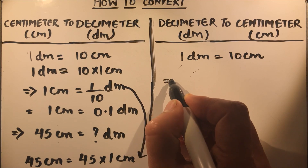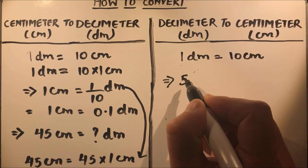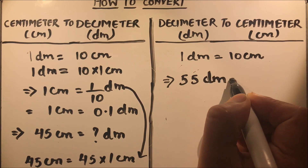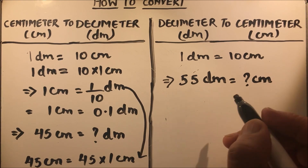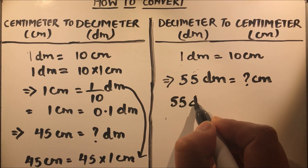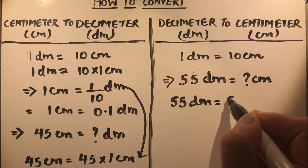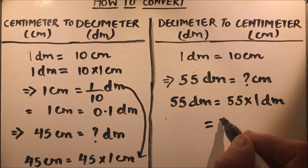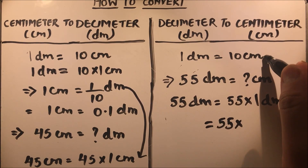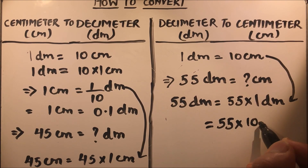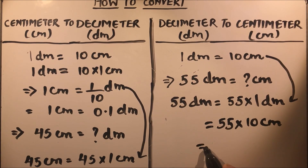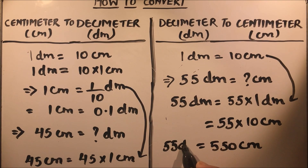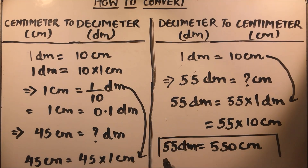Suppose we have a question to convert 55 decimeters into centimeters. We write 55 decimeters as 55 times one decimeter. We know that one decimeter equals 10 centimeters, so in terms of centimeters this will be 550 centimeters. So 55 decimeters equals 550 centimeters.